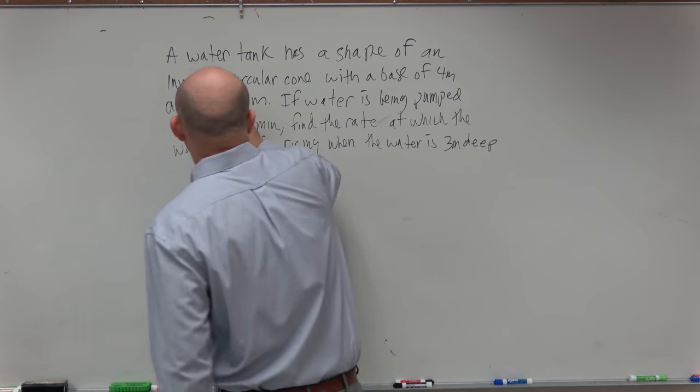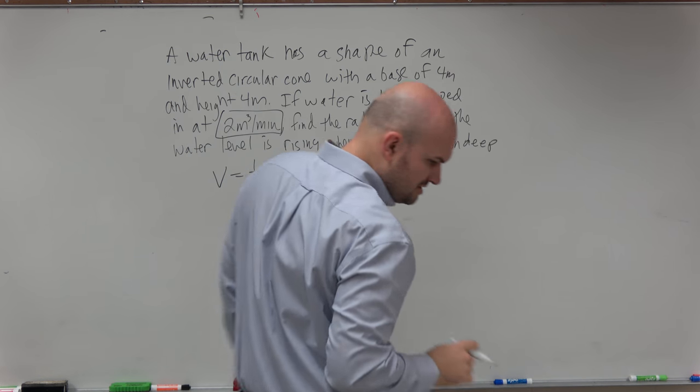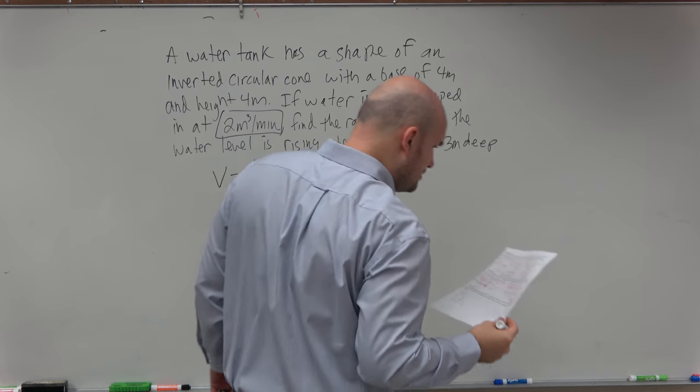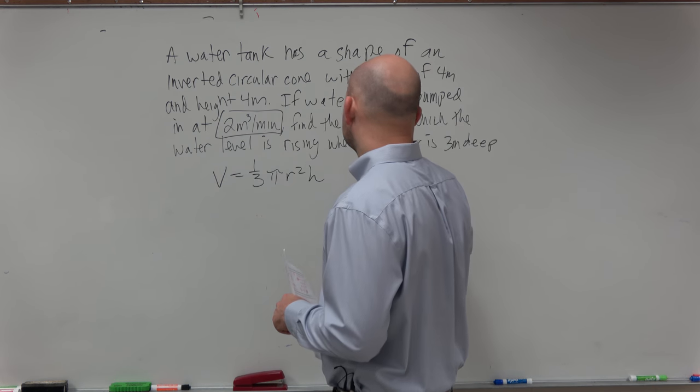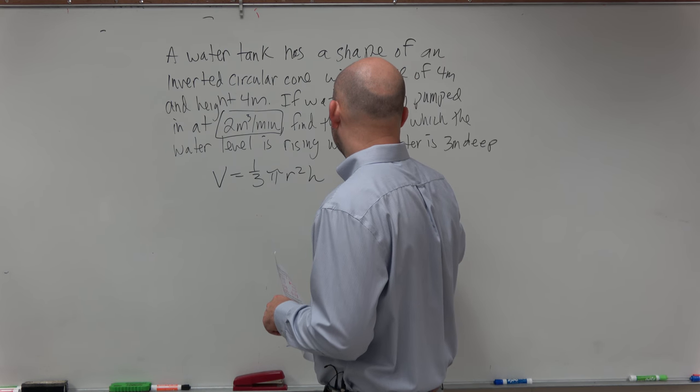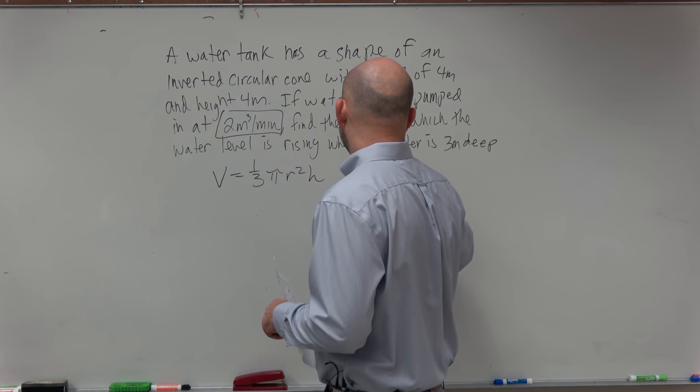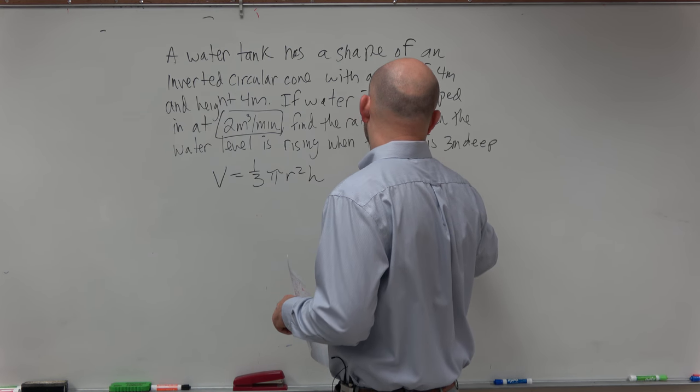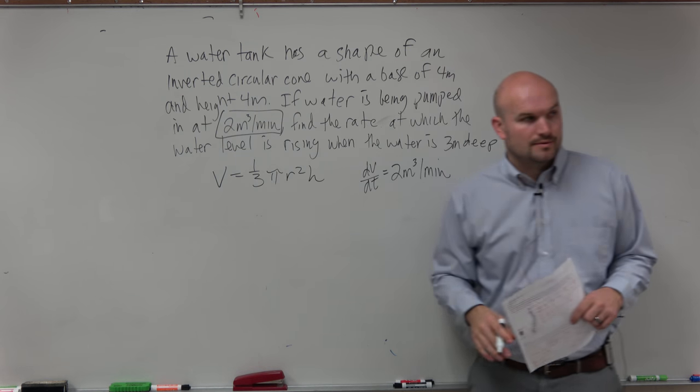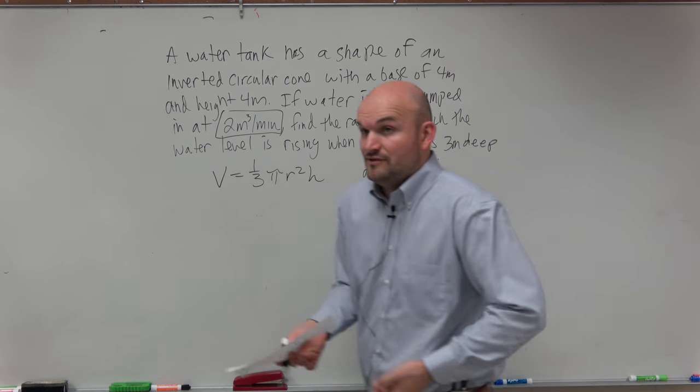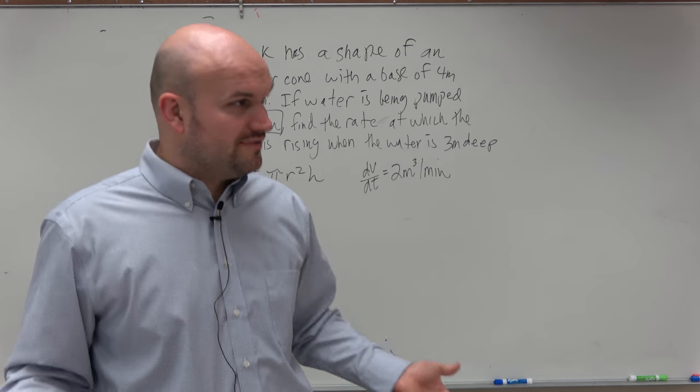We see that water is being pumped in. So we know that dV/dt is 2 cubic meters per minute, right? So therefore, we have a rate. So therefore, we know that we're going to have to go ahead and find the derivative.